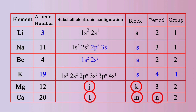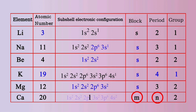The atomic number of Magnesium is 12. Its subshell electronic configuration is 1s2, 2s2, 2p6, 3s2. It is clear that Magnesium belongs to s block. The atomic number of Calcium is 20. Its subshell electronic configuration can be written as 1s2, 2s2, 2p6, 3s2, 3p6, 4s2. From the configuration, it is clear that Calcium belongs to s block and the 4th period.